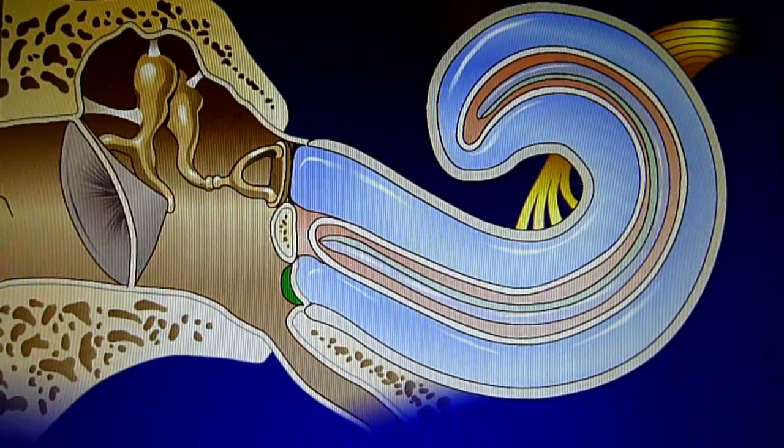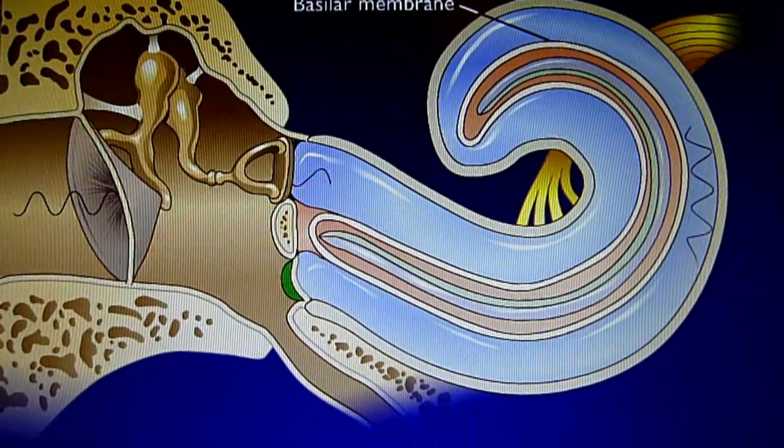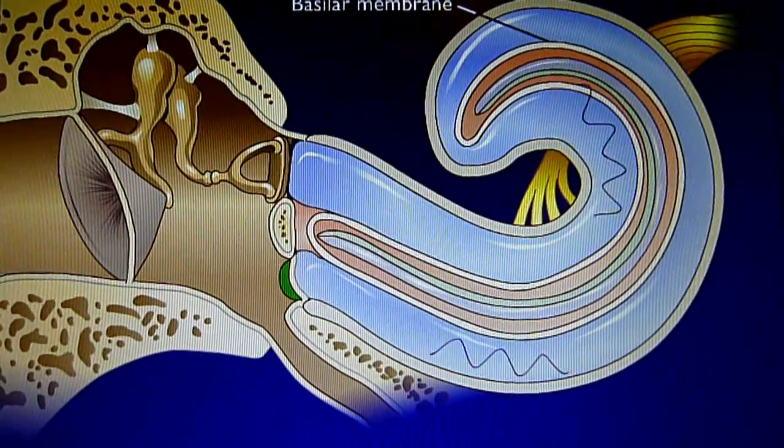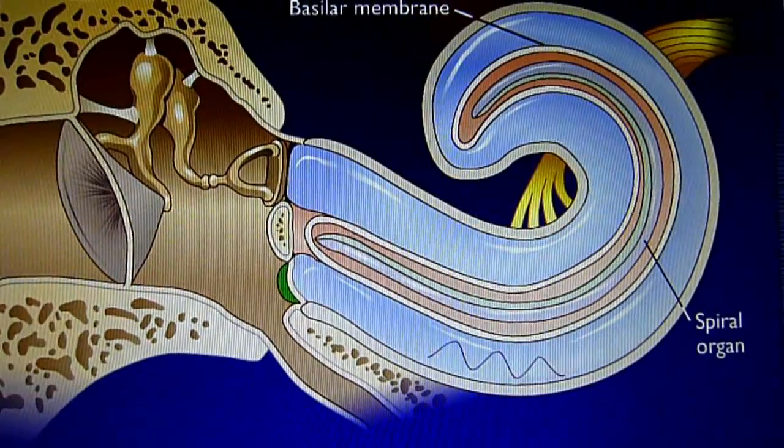Long wavelengths from low-pitched sounds cause displacement of the basilar membrane far from the oval window. Again, this movement is detected by hair cells of the spiral organ, which are not visible in the animation.